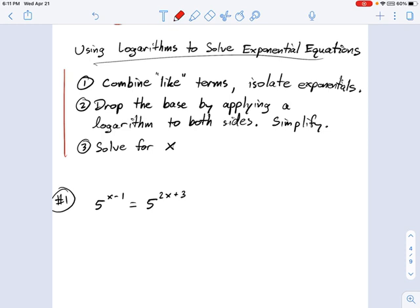First, you combine like terms and isolate the exponentials. Then here's the important one: instead of just dropping the base on each side because they're equal, we're going to drop the base by applying a logarithm to both sides, and then you simplify it and solve for x.